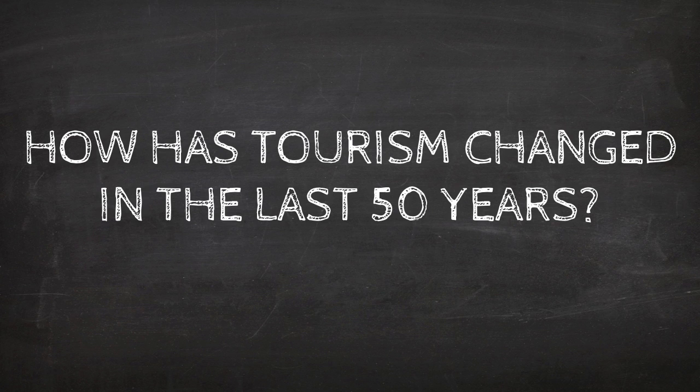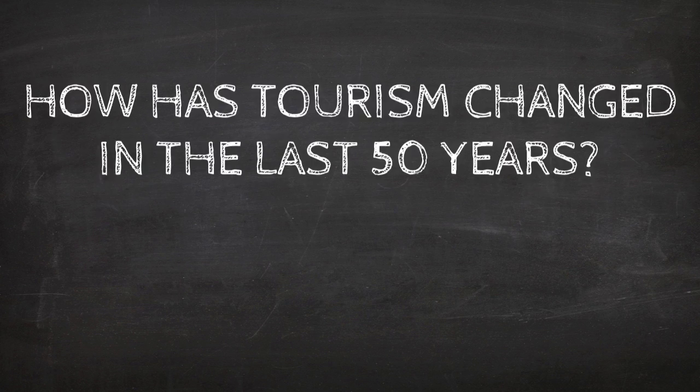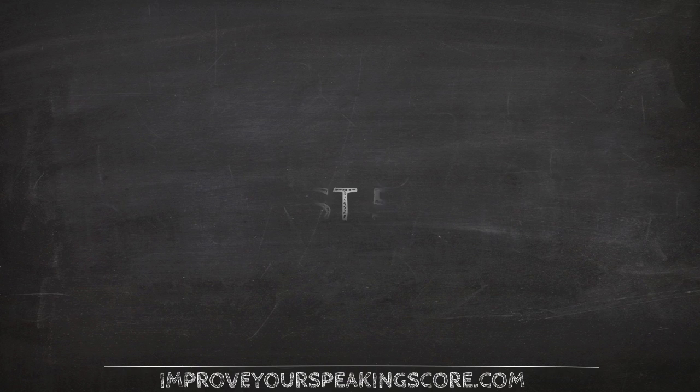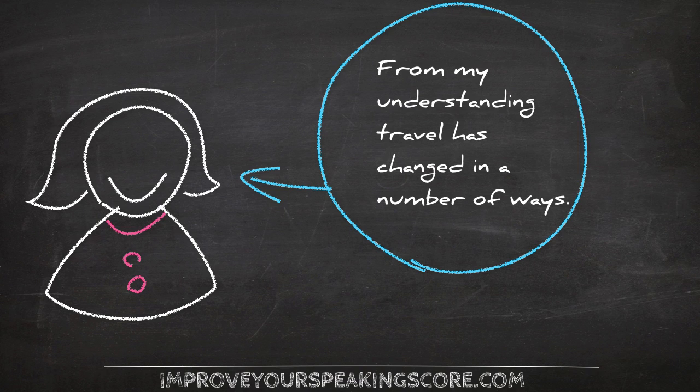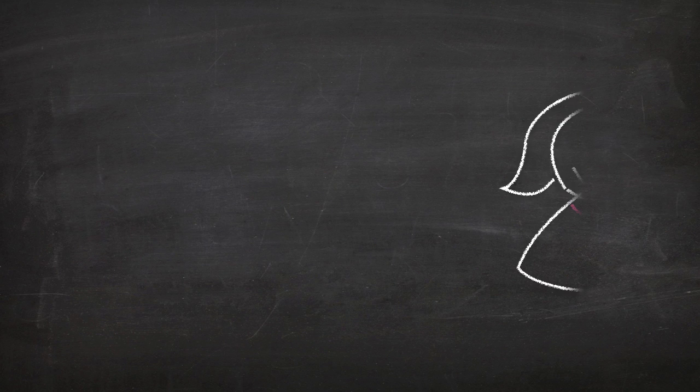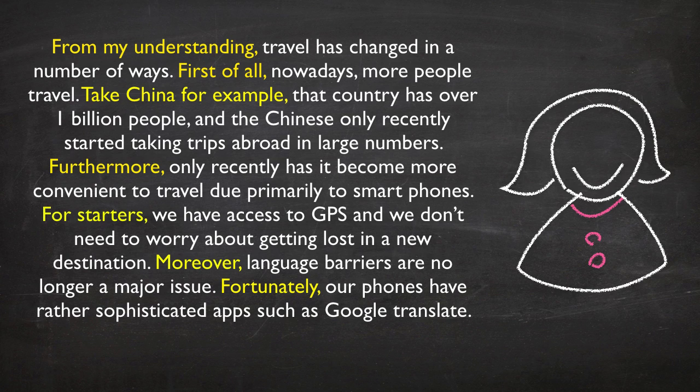Now, let's try to answer the original question about tourism that we saw earlier. How has tourism changed in the last 50 years? From my understanding, travel has changed in a number of ways. First of all, nowadays more people travel. Take China for example. That country has over 1 billion people, and the Chinese only recently started taking trips abroad in large numbers. Furthermore, only recently has it become more convenient to travel, due primarily to smartphones. For starters, we have access to GPS and we don't need to worry about getting lost in a new destination. Moreover, language barriers are no longer a major issue. Fortunately, our phones have rather sophisticated apps, such as Google Translate.